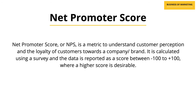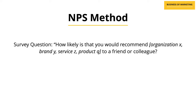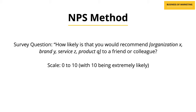Net Promoter Score, or NPS, is a metric to understand customer perception and the loyalty of customers towards a company or a brand. It is calculated using a survey and the data is reported as a score between minus 100 to plus 100, where the higher the score, the better it is for the brand being surveyed. It is supposed to be a one-question survey asking: how likely is it that you would recommend organization X, brand Y, service Z, or product Q to a friend or a colleague? A scale of 0 to 10 is provided, with 10 being extremely likely to recommend.